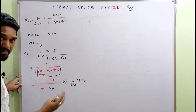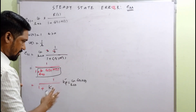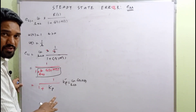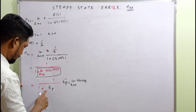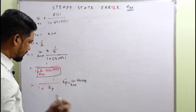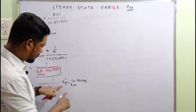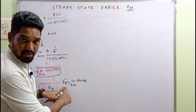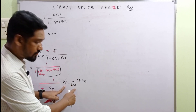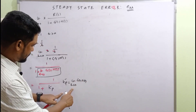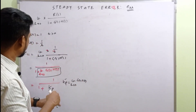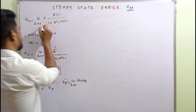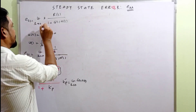This is called 1/[1 + Kp], where Kp is the positional error constant, defined as Kp = limit s→0 of G(s)·H(s). If you are asked to evaluate the positional error constant, use this equation. This expression is for step input.